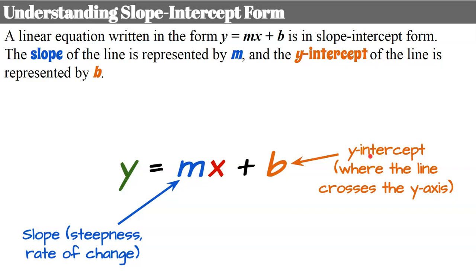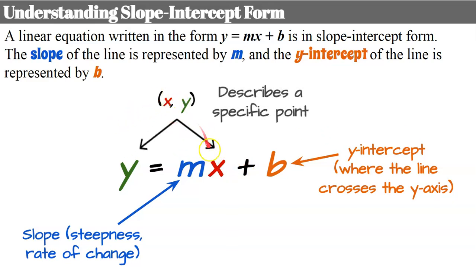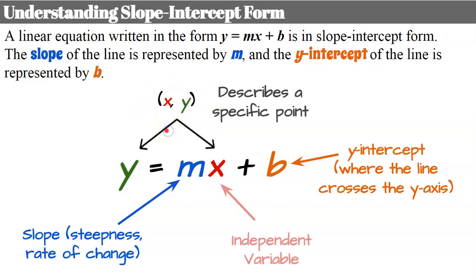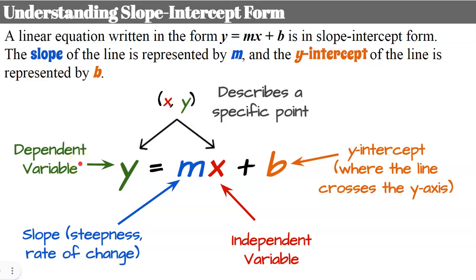The y-intercept is important because it anchors the line to the graph — it's where the line crosses the y-axis, giving us one point where the x-coordinate is always zero. Any value for x that makes the equation true gives an output y describing a specific point. Since x is the independent variable and y is the dependent variable, we can use this as a function rule to find specific y values.